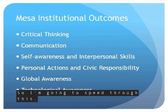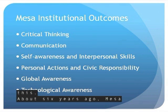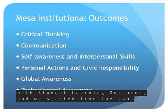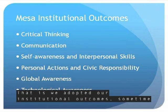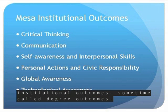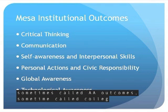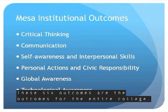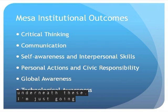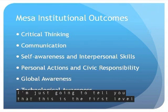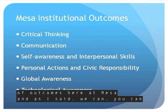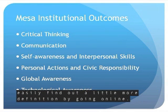About six years ago, Mesa started our work with student learning outcomes from the top — we adopted our institutional outcomes, sometimes called degree outcomes, sometimes called AA outcomes, sometimes called college outcomes. These six outcomes are the outcomes for the entire college. There is some verbiage underneath these, but this is the first level of outcomes here at Mesa, and you can find more detailed definitions by going online.